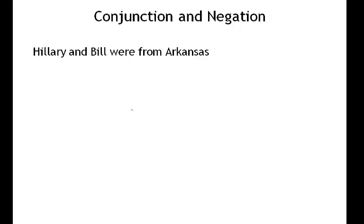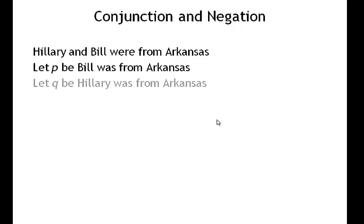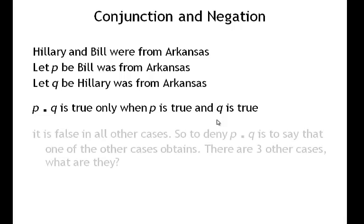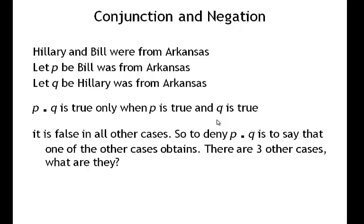'Hillary and Bill were from Arkansas' is a conjunction composed of two declarative sentences: 'Hillary was from Arkansas' and 'Bill was from Arkansas.' We let P be 'Bill was from Arkansas' and Q be 'Hillary was from Arkansas.' So P and Q is true only when both P and Q are true — when P is true and Q is true. It's false in all other cases. To deny P and Q is to say one of the other cases obtained.